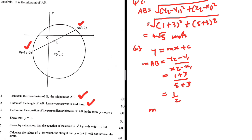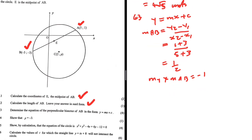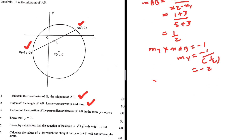So we have the gradient of AB. To find the gradient of the bisector — let's call it gradient of Y — if we multiply the gradient of Y with the gradient of AB, we get minus 1. So the gradient of Y is minus 1 divided by 1 over 2, which equals minus 2.